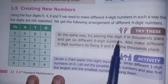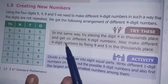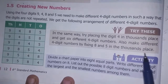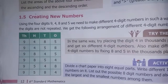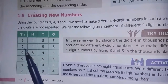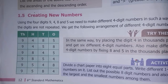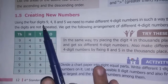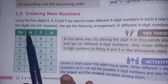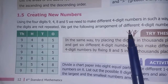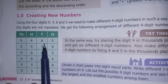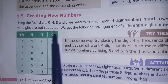Try placing the digit 4 in the 1000s place and get 6 different 4-digit numbers. Also, make different 4-digit numbers by fixing 8 and 5 in the 1000s place. Using the 4 digits 9, 4, 8, and 5, we need to make different 4-digit numbers such that the digits are not repeated. We get different arrangements of 4-digit numbers.